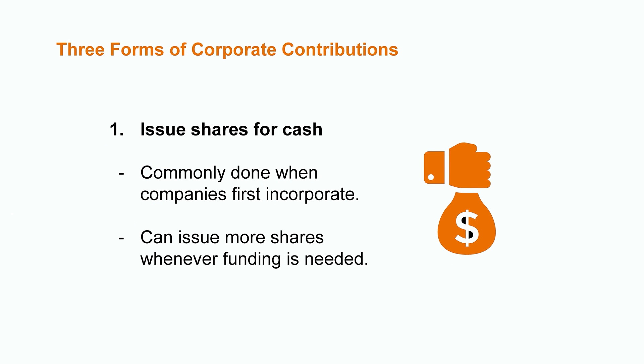Corporate contributions occur in three key forms. In most cases, corporations issue shares in exchange for cash when they first incorporate, and they have the opportunity to do so again at various intervals whenever they decide they need to raise additional funds. This is the most common form of capital contributions. For example, if you issued 100 shares at $1,000 each when you first incorporated, this would account for $100,000 of capital contribution into the organization. At a later date, when additional funds are required, you would have the opportunity to issue more shares.